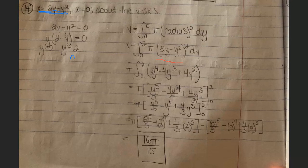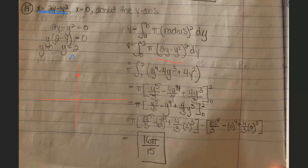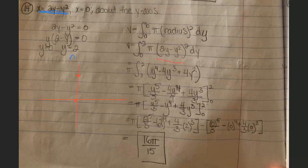The teacher notes that x equals zero is just the y-axis. The teacher redirects the student, asking them not to answer questions with questions. They draw the graph again, marking points such as 2 and 1, and ask the student to figure out the vertex of the parabola.